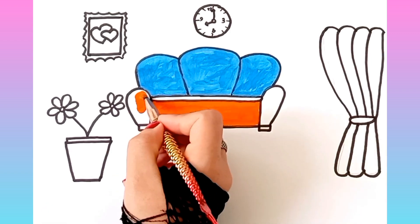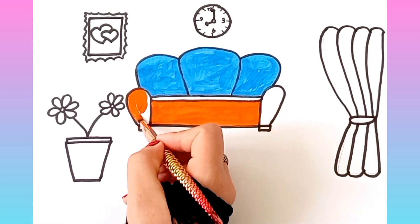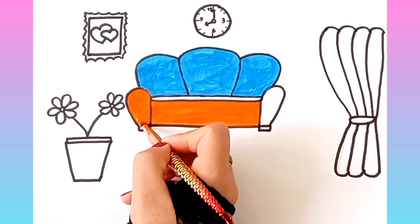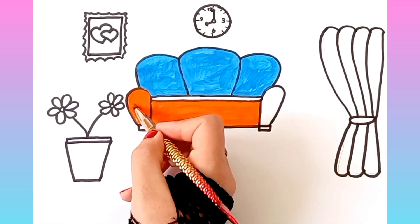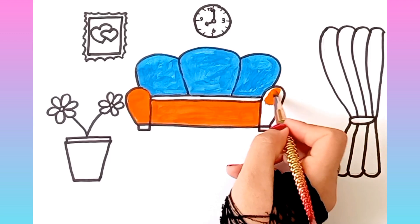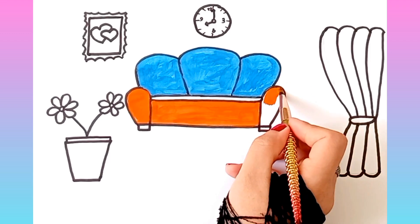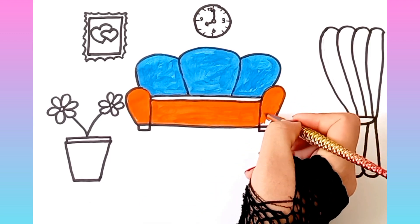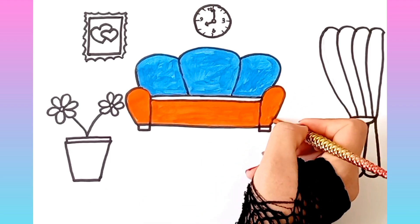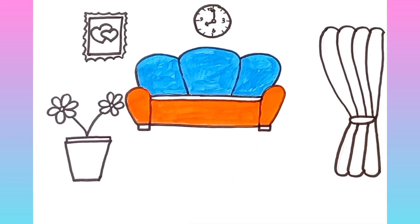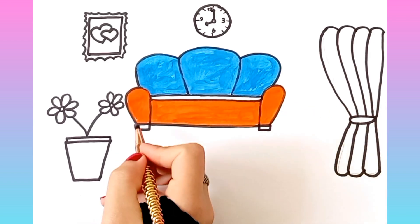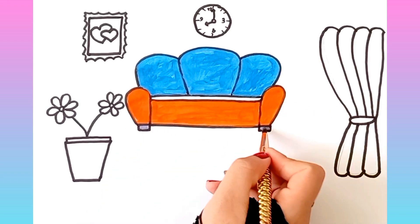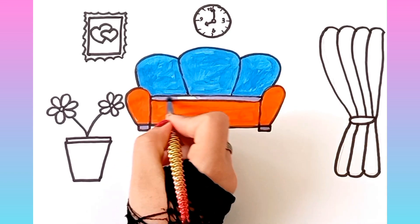D is for doll, d, d, doll. E is for elephant, e, e, elephant. F is for frog, f, f, frog.